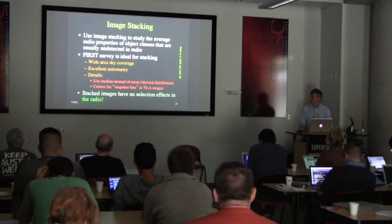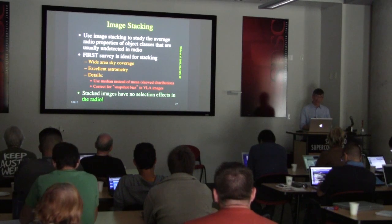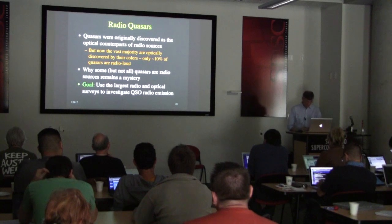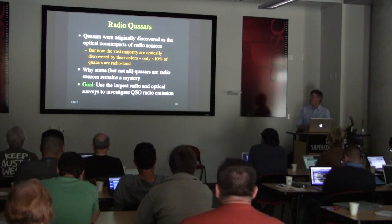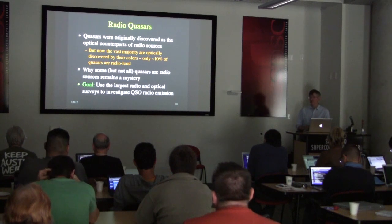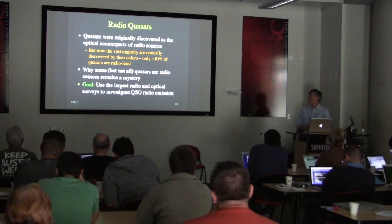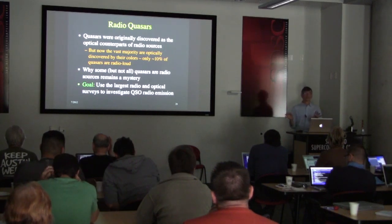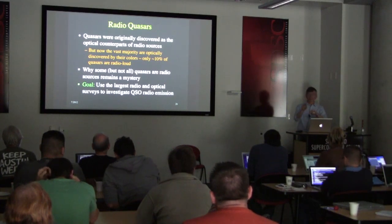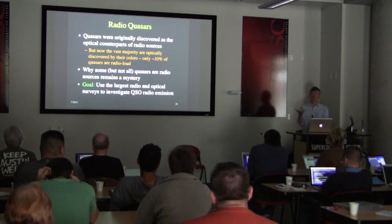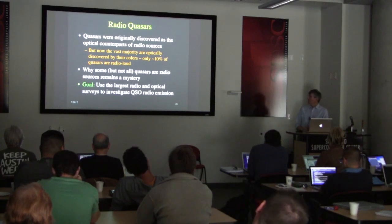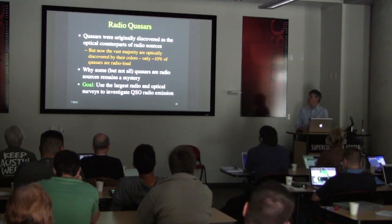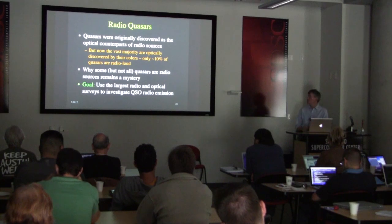A bit about radio quasars: quasars were originally discovered as radio sources in the early 1960s, as the optical counterparts to radio sources. They're called quasars — a portmanteau for 'quasi-stellar radio sources' — because those counterparts looked like stars rather than galaxies or nebulae. It's now known that the vast majority of quasars are optically discovered by their colors and are not radio sources; only about 10% of quasars are radio sources.